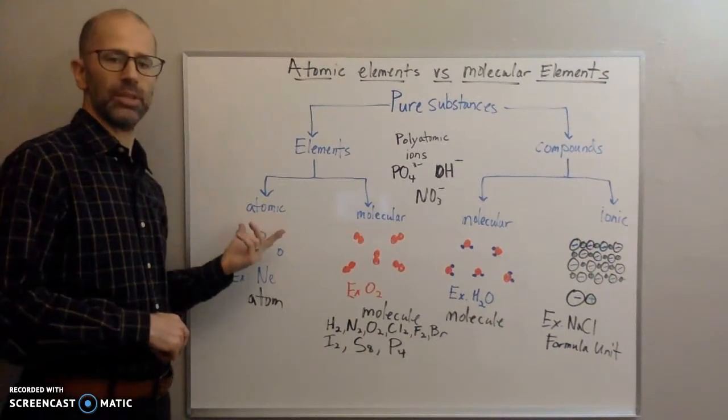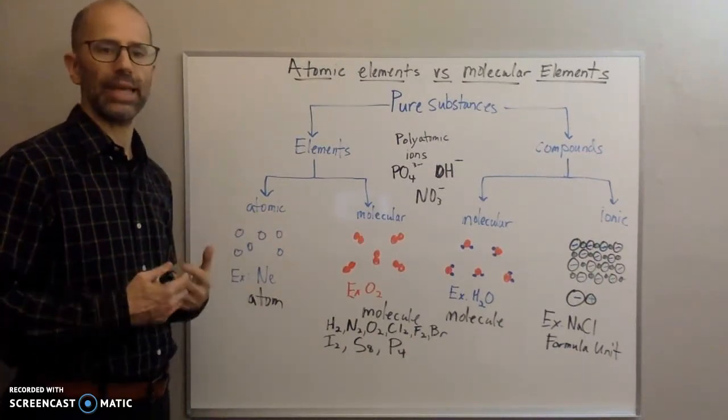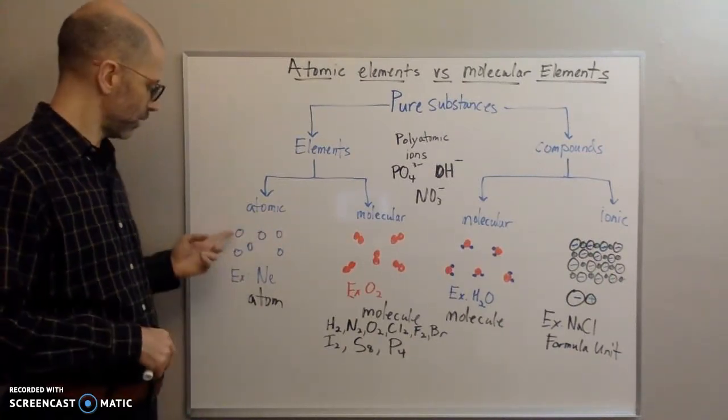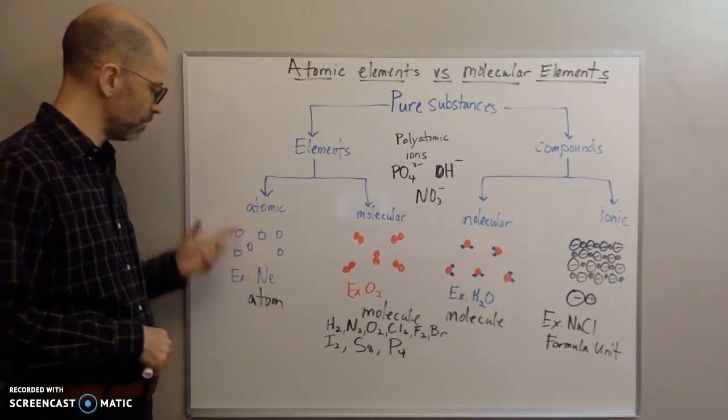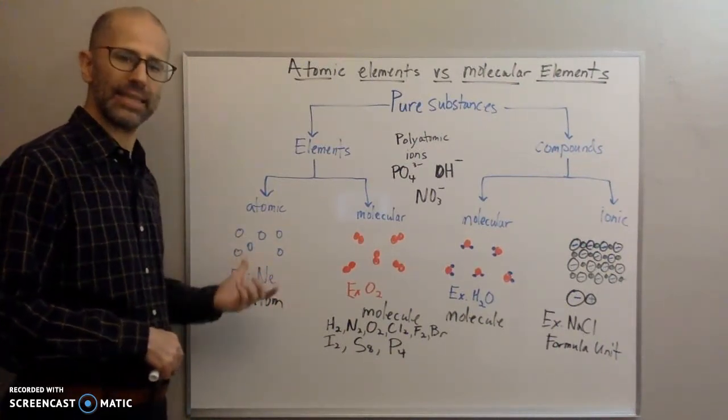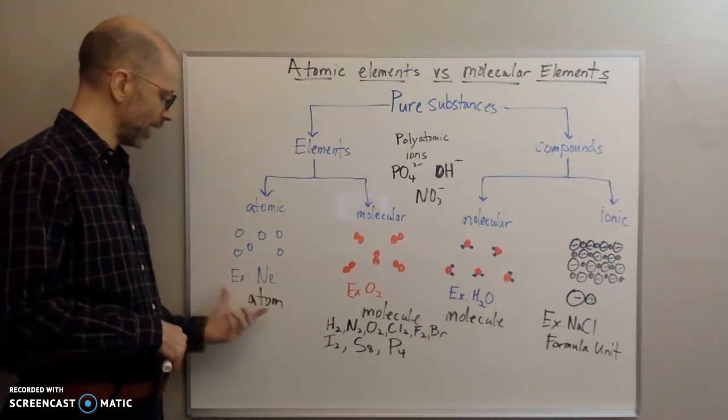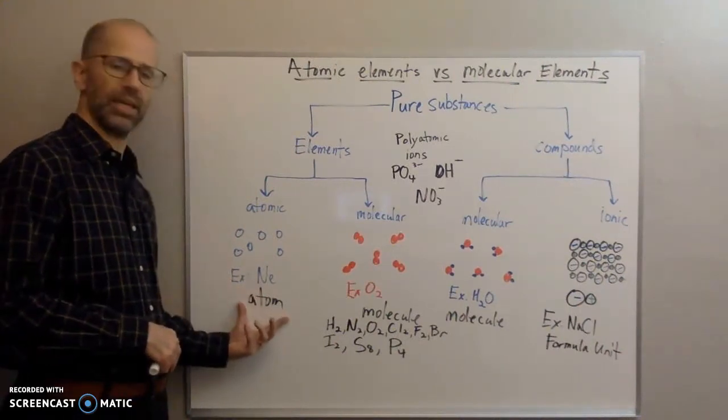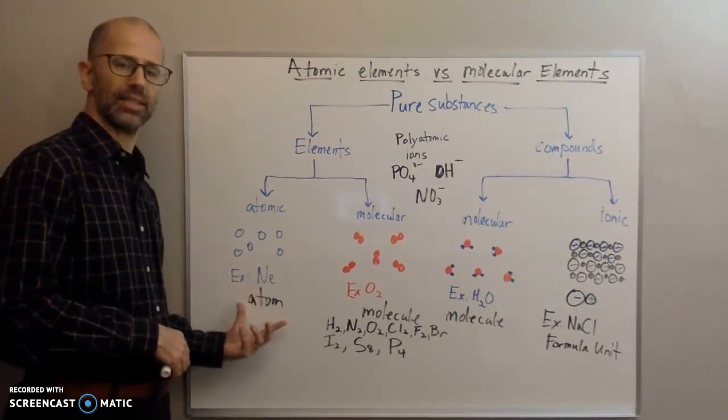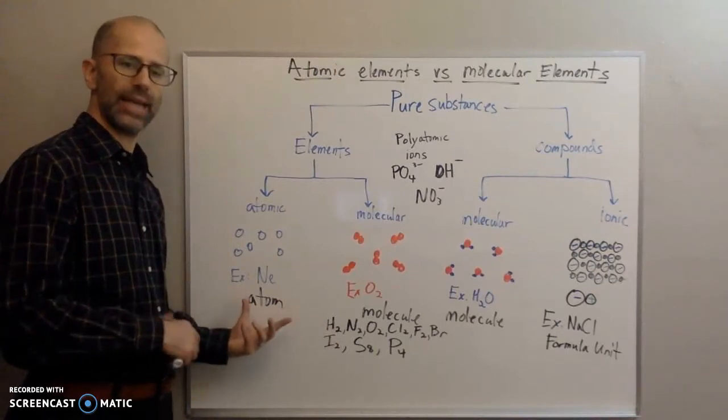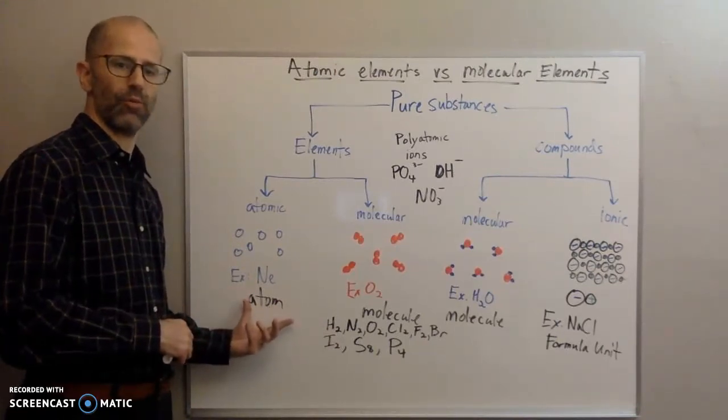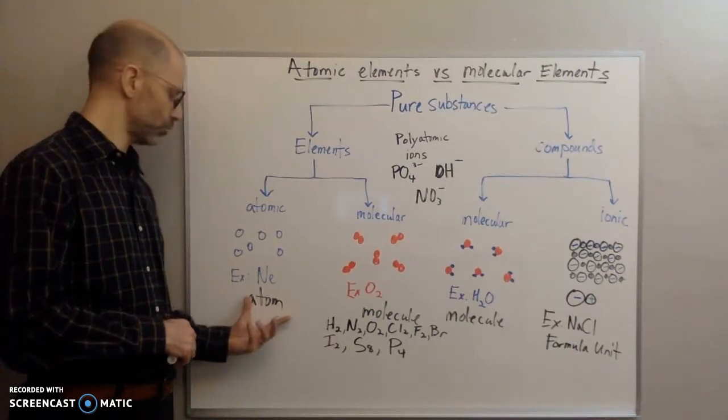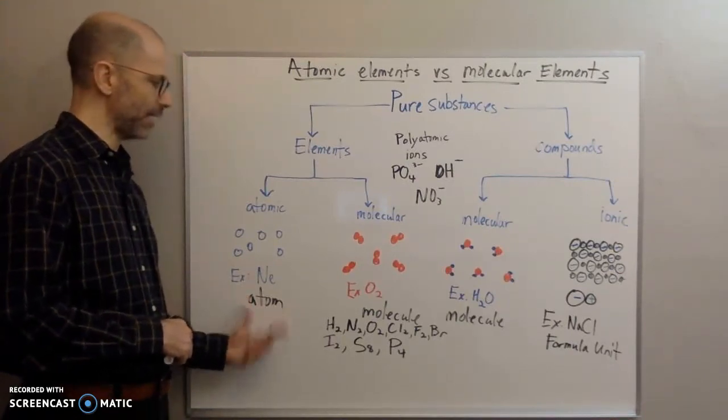Atomic elements are elements that exist only as single atoms. That's the way they exist in nature. So an example of that would be neon. Neon exists only as single atoms in nature. You don't find them as molecules, so you only get atoms.